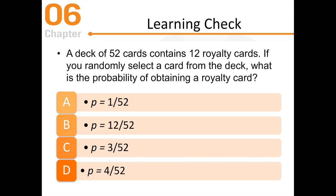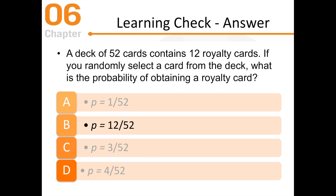Let's do another example. A deck of 52 cards contains 12 royalty cards — the Kings, Queens, and Jacks. If you randomly select a card from the deck, what is the probability of obtaining a royalty card? You would take 12 divided by 52 to find your probability.